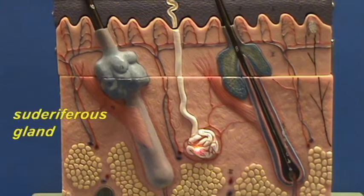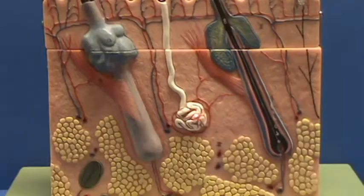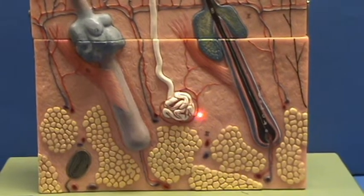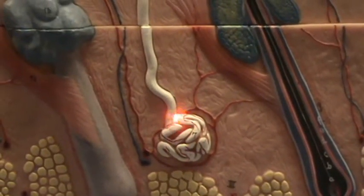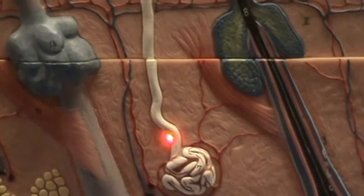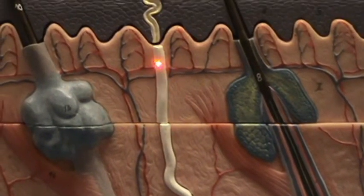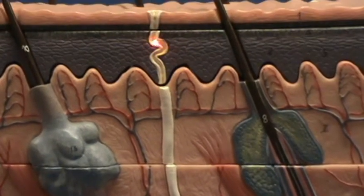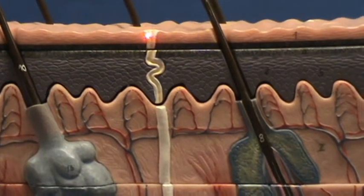This is the sudoriferous gland, also simply referred to as the sweat gland. You can see that this is a tubular gland. This is the location where the sweat would be produced, and then the secretions would travel up towards the surface of the skin through this duct and open up by way of a pore right over here.